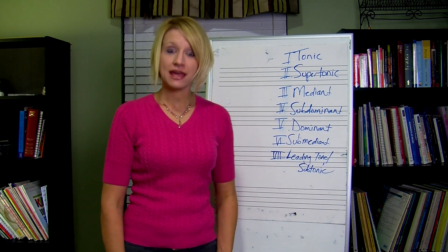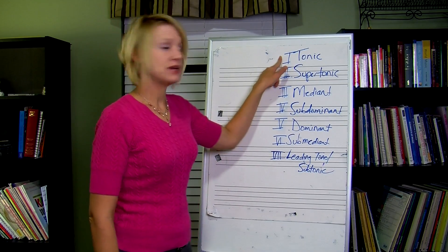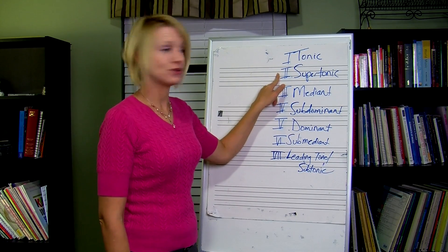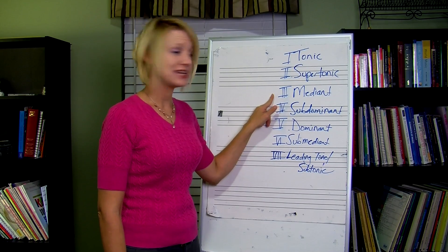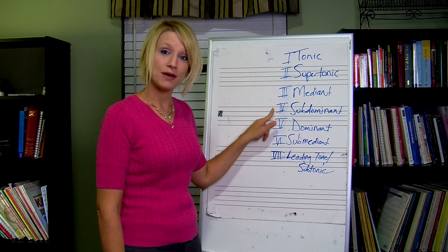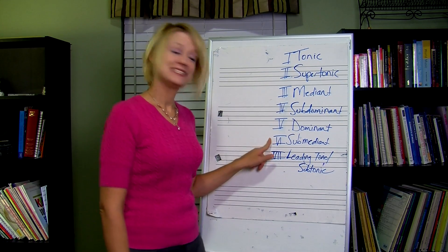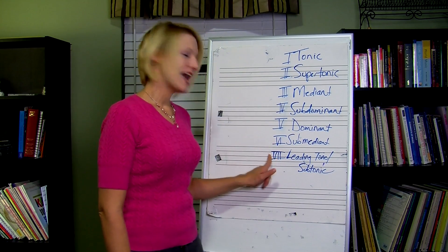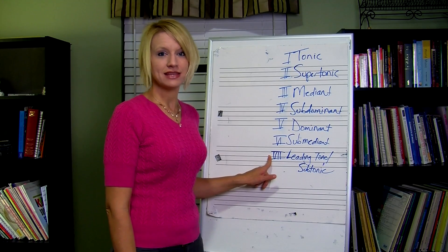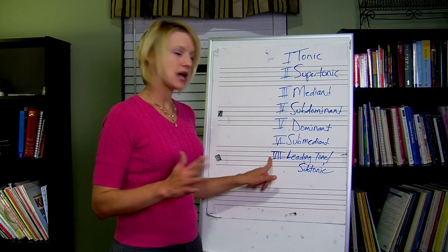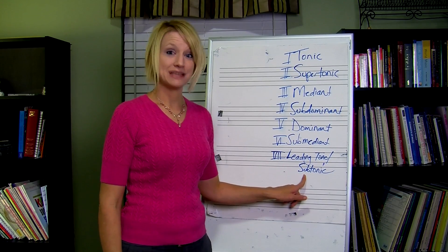The names of the scale degrees are: the first scale degree is the tonic, the second is the supertonic, the third is the mediant, the fourth is the subdominant, the fifth is the dominant, the sixth is the submediant. And the seventh, depending on whether that seventh is a half step from the tonic or not, is either a leading tone or the subtonic.